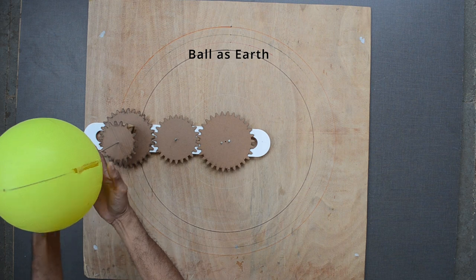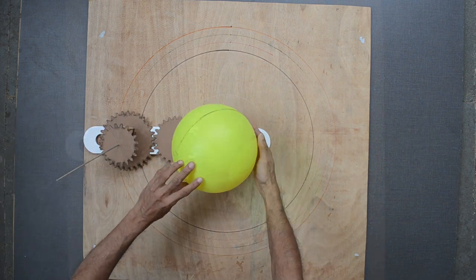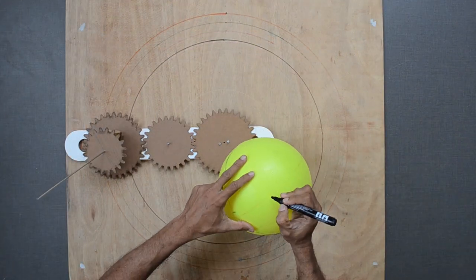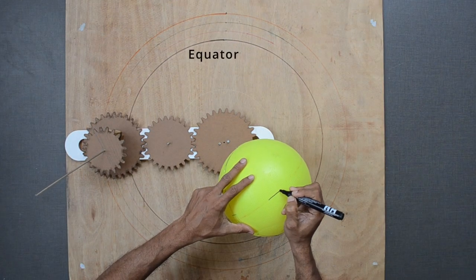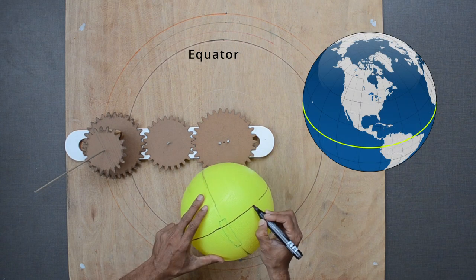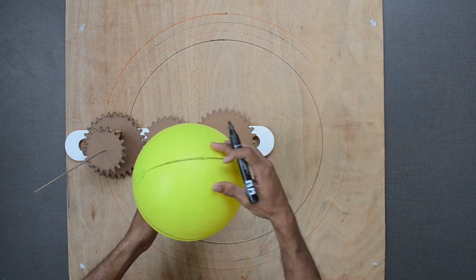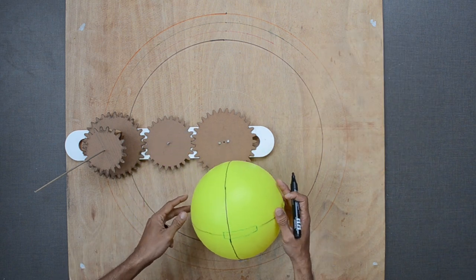This plastic ball is our Earth. Let us mark some lines for reference. These lines are imaginary lines. The line marked in black is called the equator. It runs horizontally and divides the Earth into two equal parts: Northern Hemisphere and Southern Hemisphere.